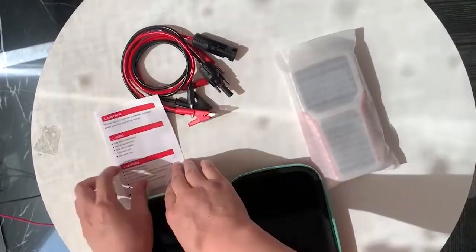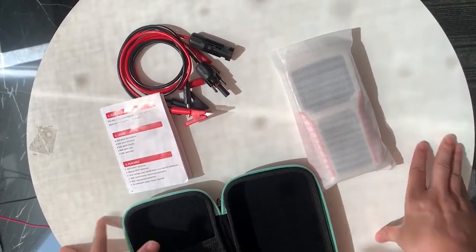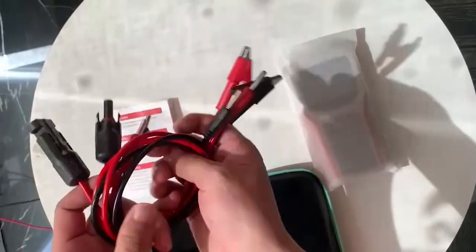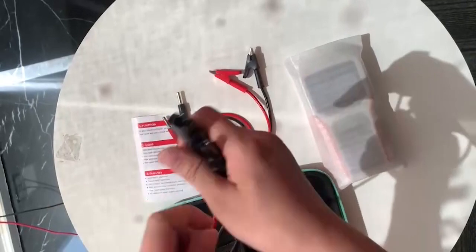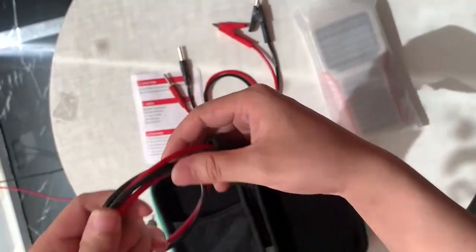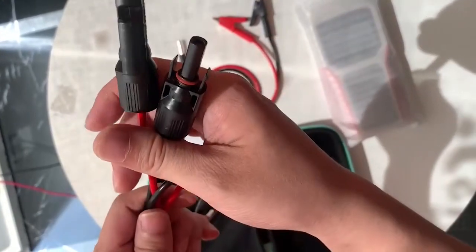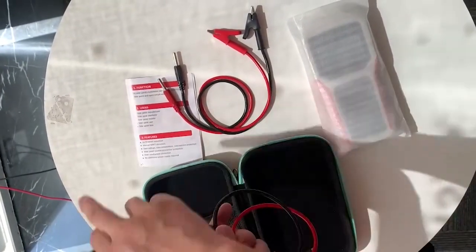The menu teaches you to use this tester step by step. Two kinds of cables - this is MC4. Some solar panels have this MC4 connector, so you can connect this tester to the solar panel directly.